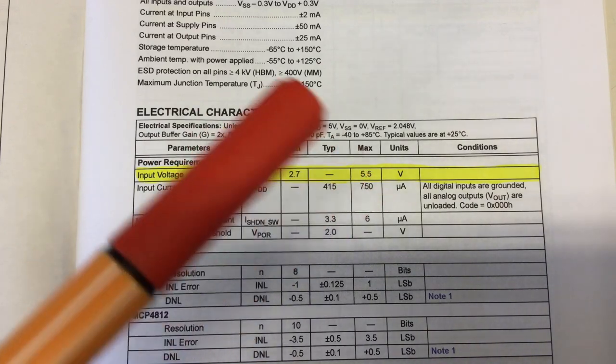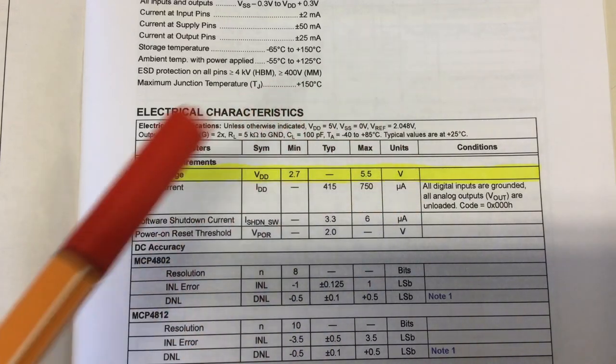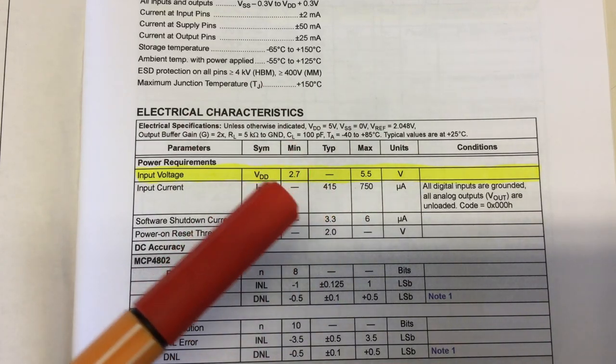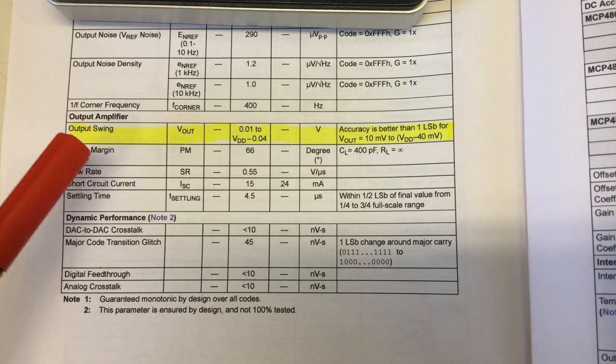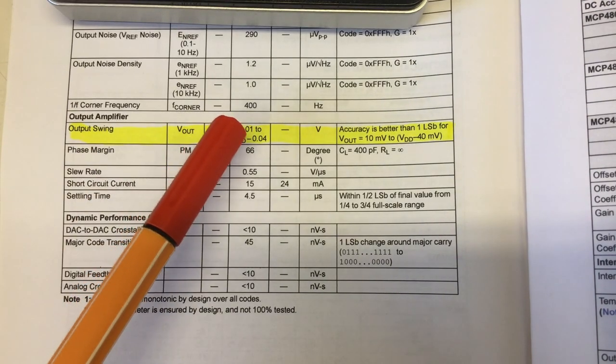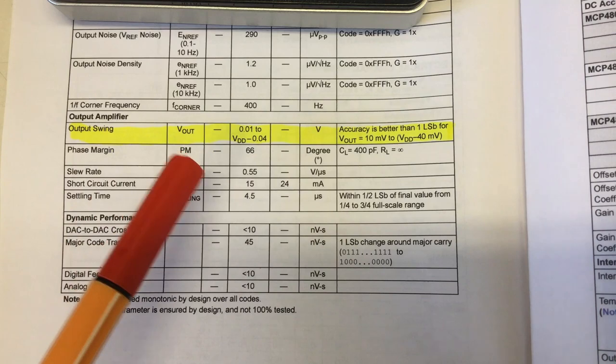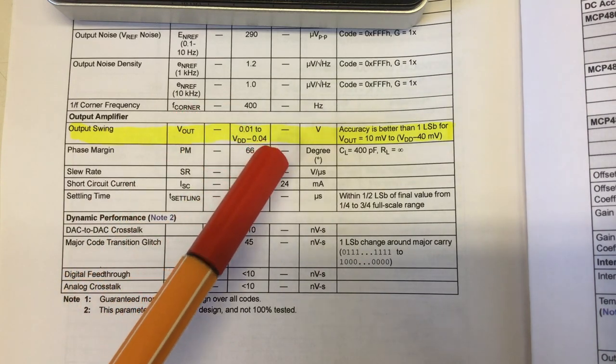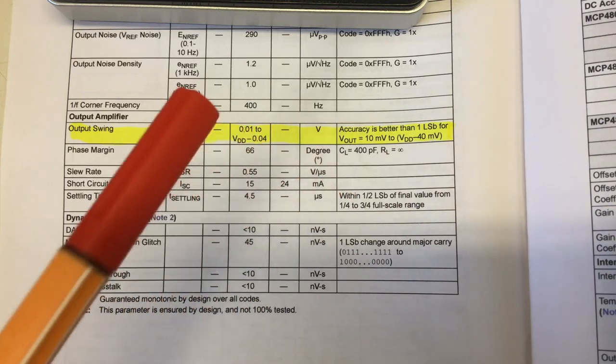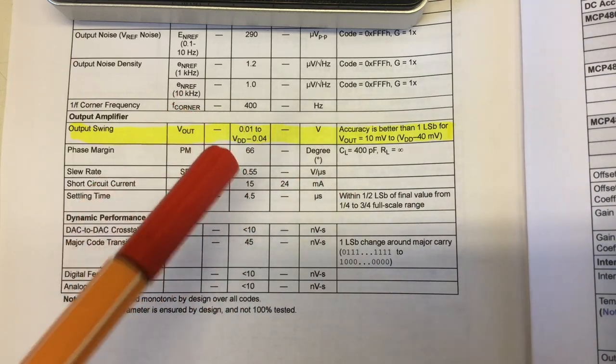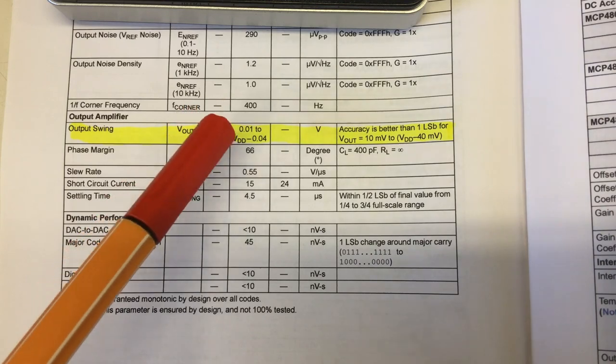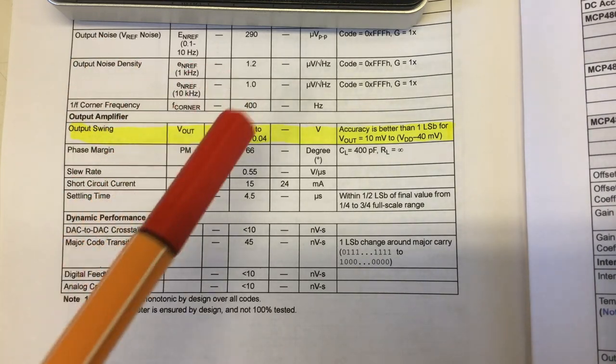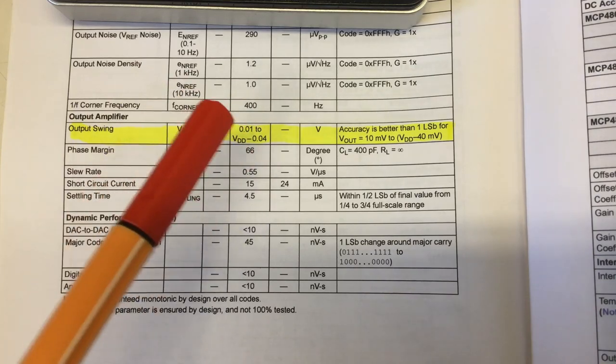But note, you cannot get in gain 2 mode voltage of 4 volts out of these things if you operate them at 3.3 volts. The swing of the output amplifiers is actually between 0.01 volts and your supply voltage minus 0.04 volts. So almost rail to rail. But please keep in mind, you cannot get the outputs down to really 0 volts. You have at least 10 millivolts at the output also.